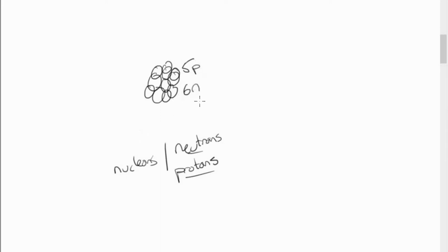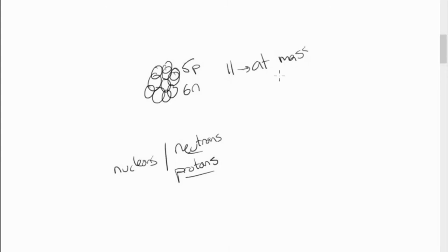What is the nucleon number? The total number of nucleons — protons and neutrons — is 11. Nucleon number is also known as atomic mass, which is 11. And what is the atomic number? Atomic number is basically the number of protons, which would be 5 in this case.